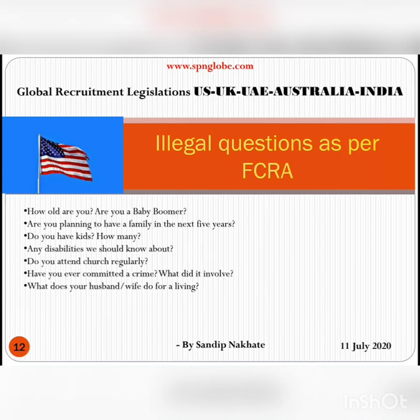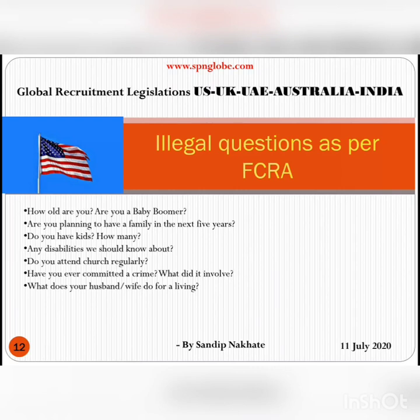There are certain guidelines for recruiters working on US recruitment. As per the FCRA, you must avoid asking certain questions directly, such as: 'How old are you?', 'Are you a baby boomer?', 'Are you planning to have a family in the next five years?', 'Do you have kids?', 'Any disabilities we should know about?', 'Do you attend church regularly?', 'Have you ever committed a crime — what did it involve?', or 'What does your husband or wife do for a living?'